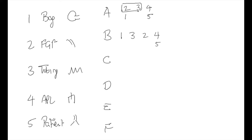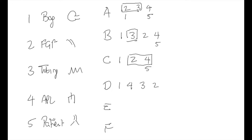C, being the third letter, will require you to delete 3, so it's 1, 2, 4, and 5. D, being the fourth letter, will require you to swap positions 2 and 4 around, whilst inserting back in 3.